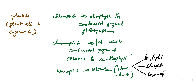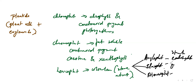Leucoplasts are further divided into three types based on what they store: amyloplasts store carbohydrates and starch, elioplasts store oils and fats, and aleuroplasts store proteins.